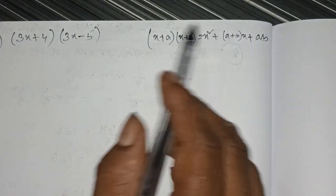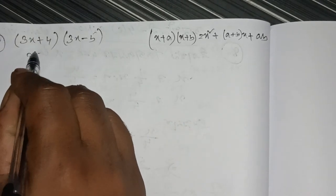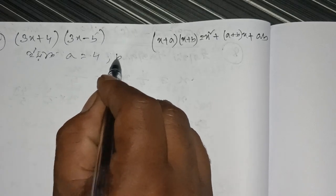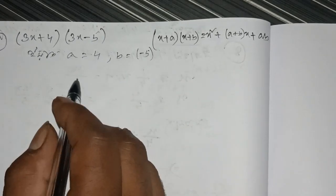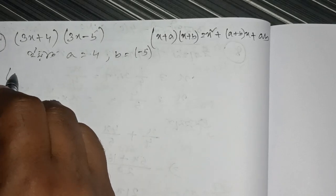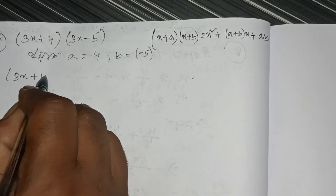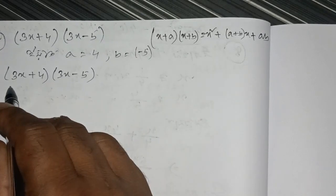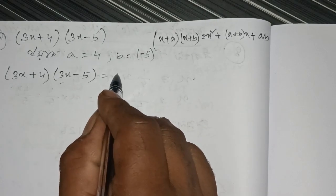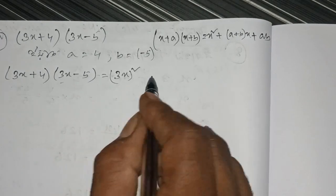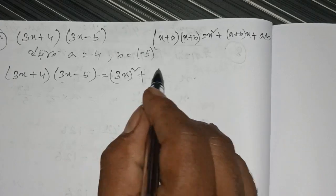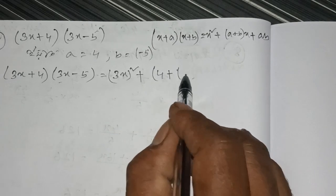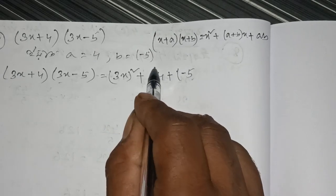So a is equal to 4 and b is equal to minus 5. Applying the formula: a plus b equals 4 plus minus 5, and ab equals 4 into minus 5. So the expanded form follows directly from the identity.